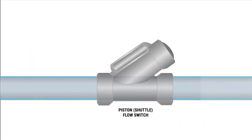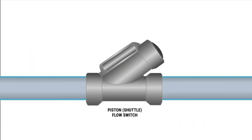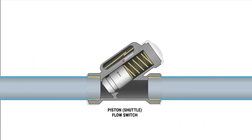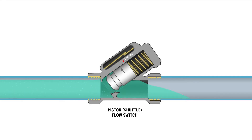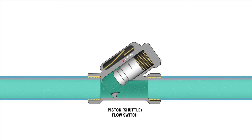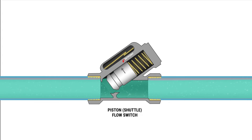Next we have the piston or shuttle design flow switch. With a piston type flow switch, a free-floating magnetic piston responds to the amount of flow within the line. When there's an increase or decrease in the flow rate, movement of the piston actuates a hermetically sealed reed switch, triggering the specified action.